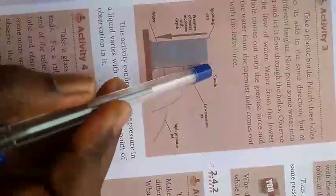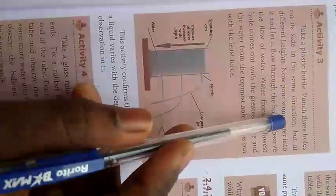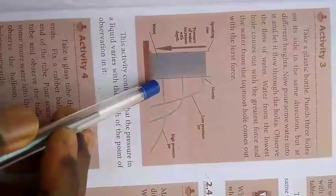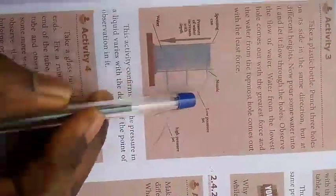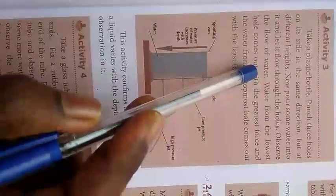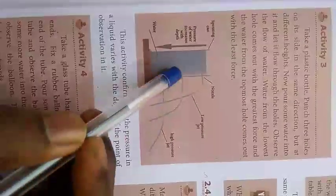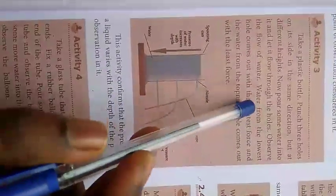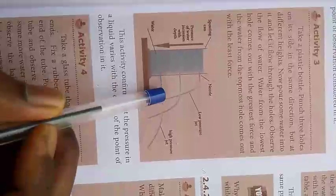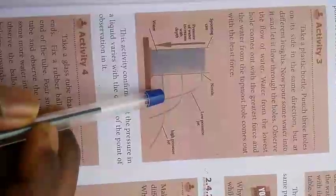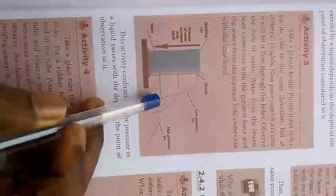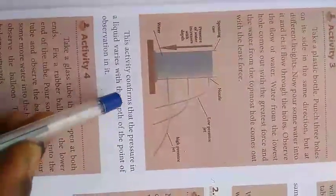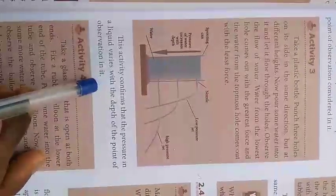Pour water into the bottle and observe: water from the lowest hole comes out with the greatest force, while water from the topmost hole comes out with the least force. This activity confirms that pressure in a liquid varies with the depth of the point of observation.